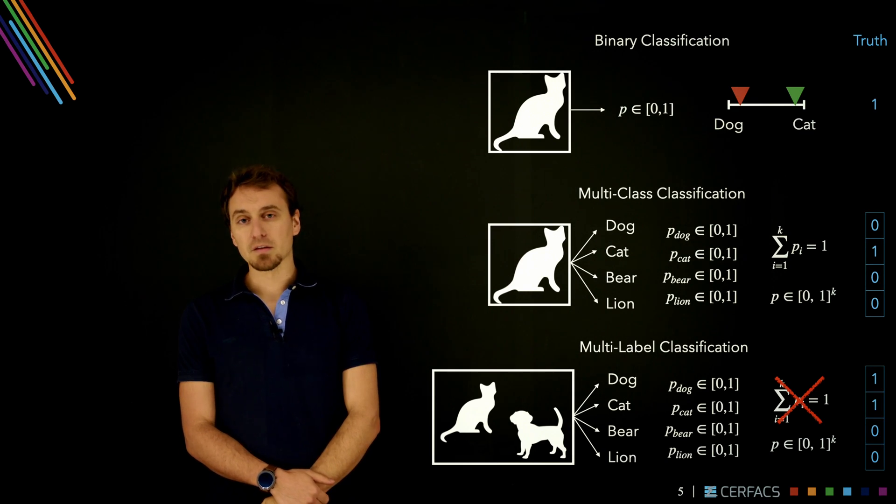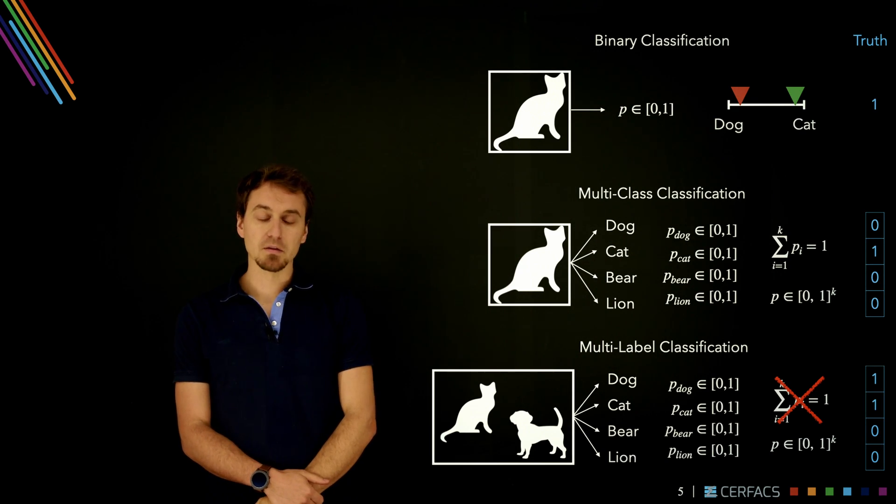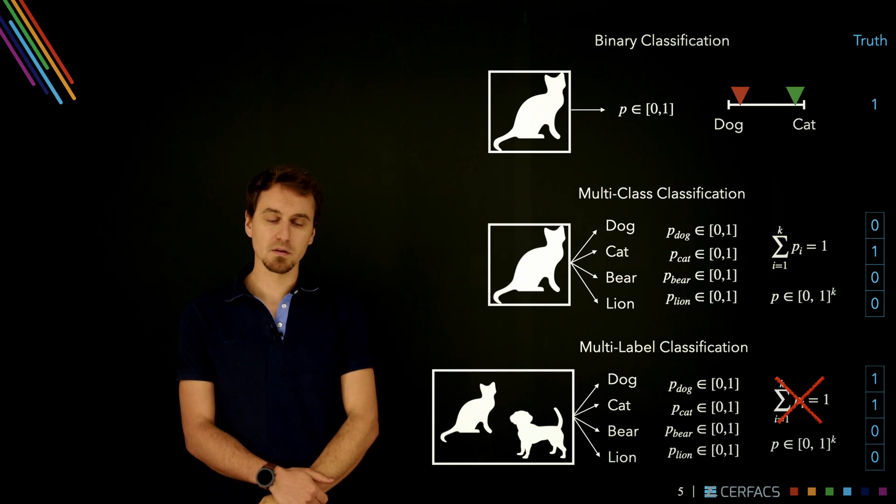And in multi-label classification, that's exactly the same except that we have relaxed the constraint, and so you can have several 1s in this vector.